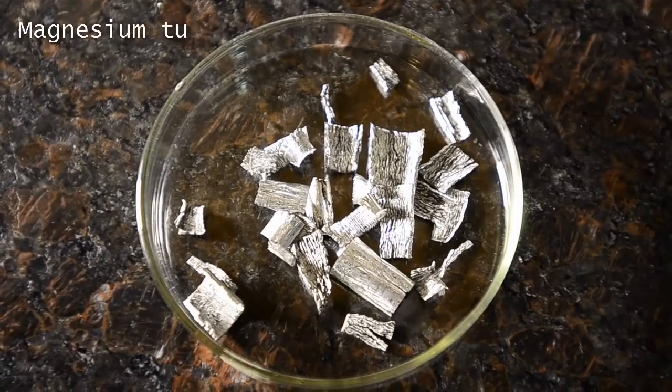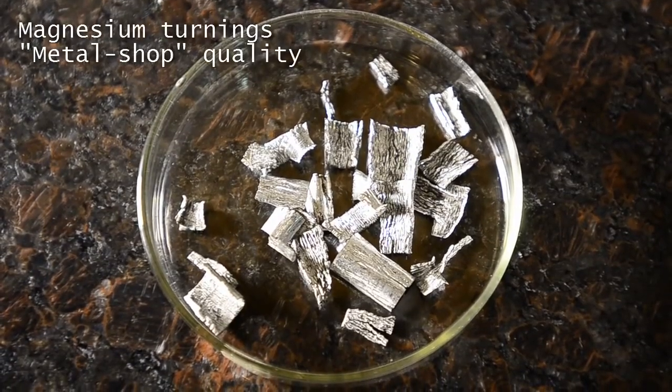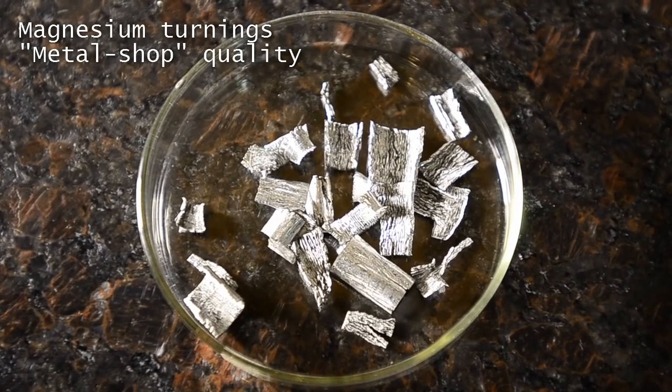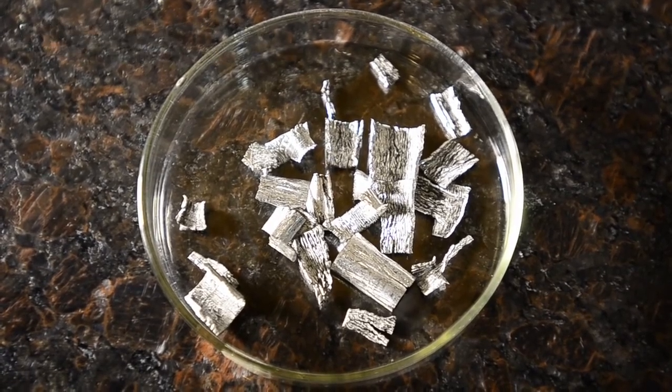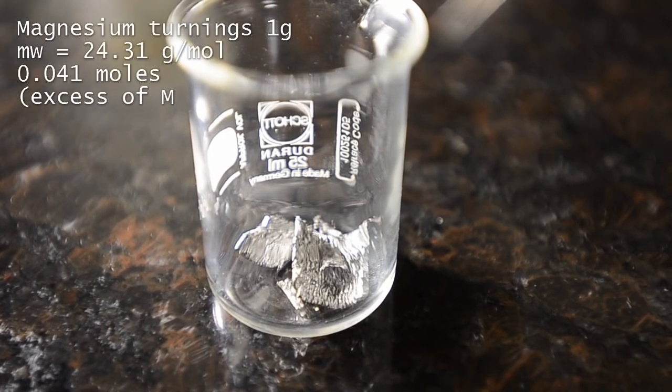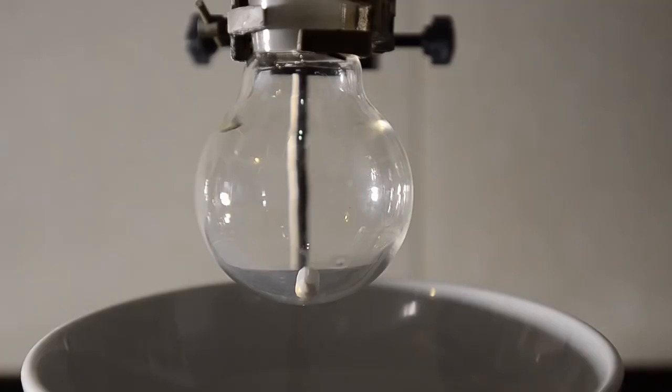Our magnesium turnings are from a metal shop, they've got black specks on them and visible white oxide. We have however dried them in the oven. We weighed out 1 gram of the magnesium turnings and then placed these in the flask. We didn't attempt to dry them in any way.